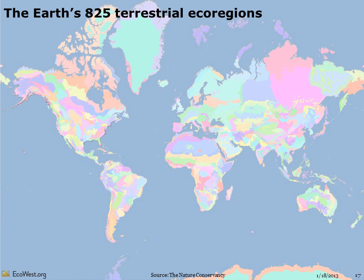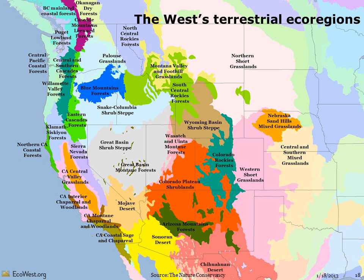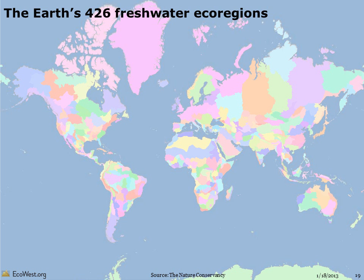Let's take a closer look at ecoregions, which are a helpful unit of analysis for examining the incredible diversity of species and ecosystems that inhabit the world and the West. A more fine-grained view than biomes classifies the terrestrial world into 825 unique ecoregions — ecological neighborhoods with similar habitat. The slides that follow are based on the Nature Conservancy's Atlas of Global Conservation, which analyzes the global environment using terrestrial and freshwater ecoregions.